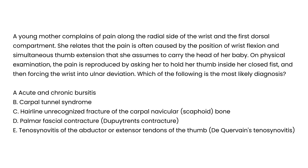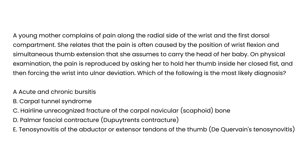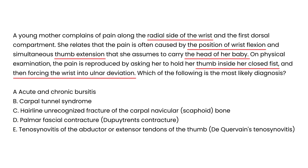A young mother complains of pain along the radial side of her wrist and the first dorsal compartment. The pain is often caused by wrist flexion and simultaneous thumb extension as she carries her baby's head. On physical exam, pain is reproduced by asking her to hold her thumb inside her closed fist and forcing the wrist into ulnar deviation — the Finkelstein test — consistent with De Quervain's tenosynovitis from repetitive use carrying her baby.